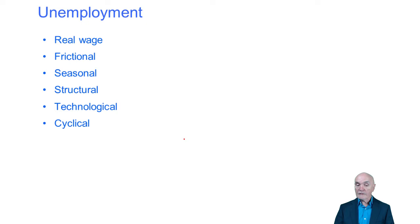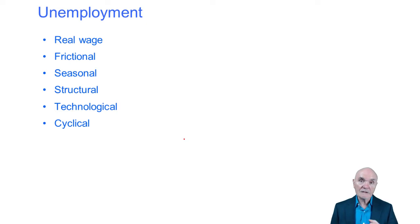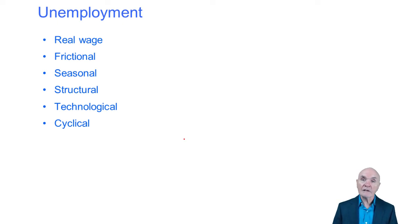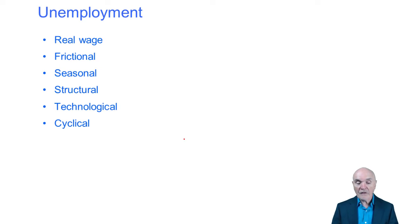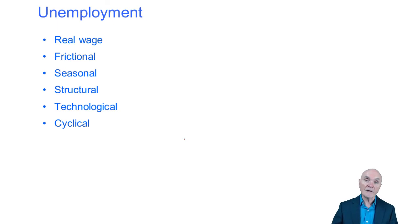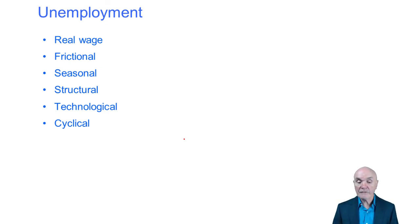Unemployment: the types you need to know. Real wage unemployment is where wages have increased to a point where employers will not employ anyone else at that price — wages are so high that it dampens employment and may encourage employers to reduce high-salaried staff. Frictional unemployment is temporary — it's the unemployment associated with people between jobs. You might leave your job now and have two weeks of unemployment before starting your new job; it's not a big problem and pretty inevitable.